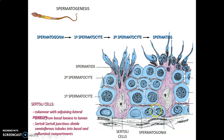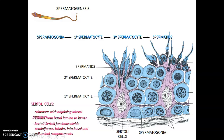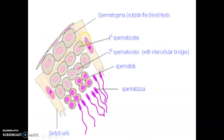This is your Sertoli cell and another Sertoli cell. You have columnar Sertoli cells with adjoining lateral processes or extensions lying on their basement membrane. These Sertoli-to-Sertoli junctions divide the seminiferous tubules into the basal compartment and the adluminal compartment. The spermatogonia are in the basal compartment, genetically identical to somatic cells, while the spermatocytes are in the adluminal compartment. The cells undergoing meiosis, where crossing over occurs, are in the adluminal portion, and mature sperms are within the lumen of the seminiferous tubule.